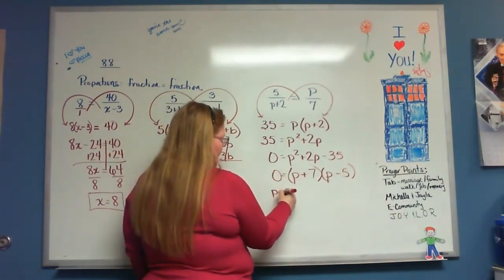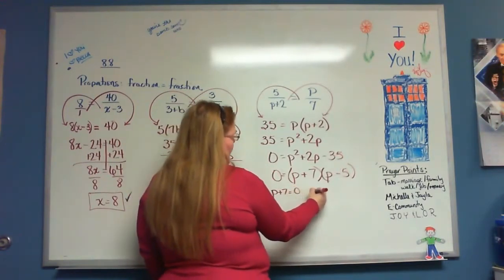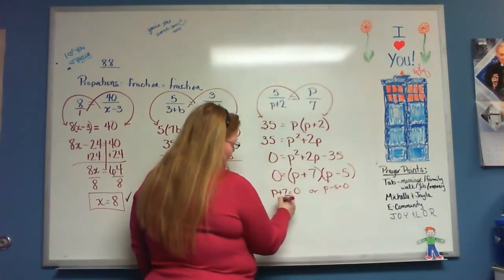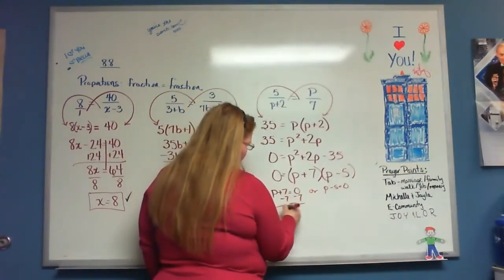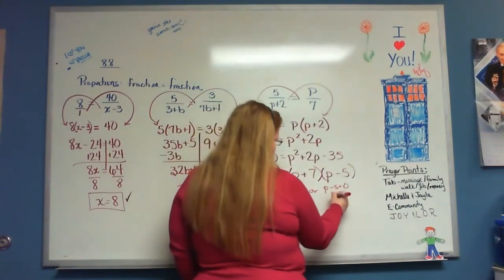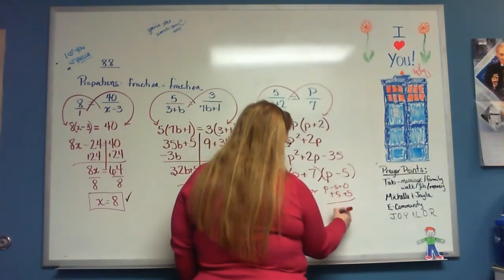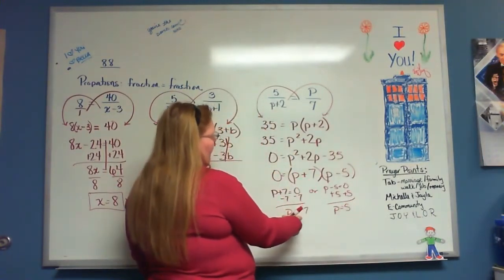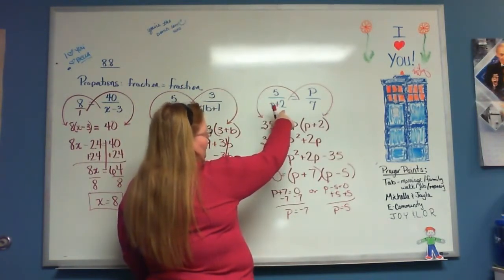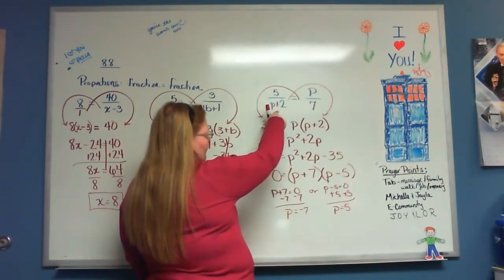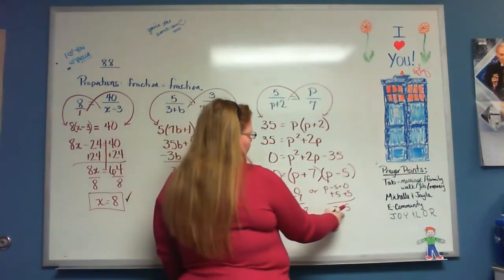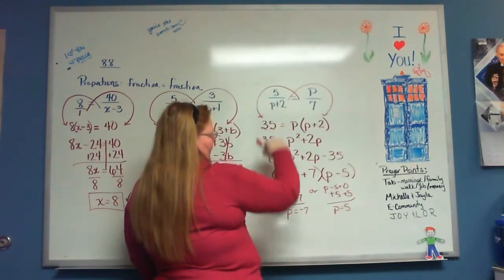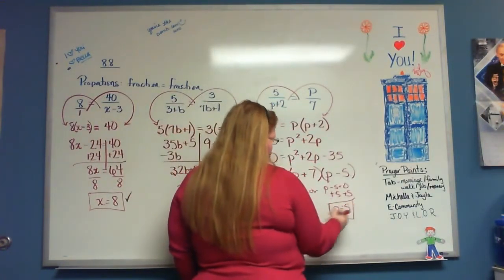Which means p plus 7 is equal to 0 or p minus 5 is equal to 0. p equals negative 7, p is equal to 5. Now, if I put a negative 7 up here, negative 7 plus 2 gives me a negative 5. That's okay to have.